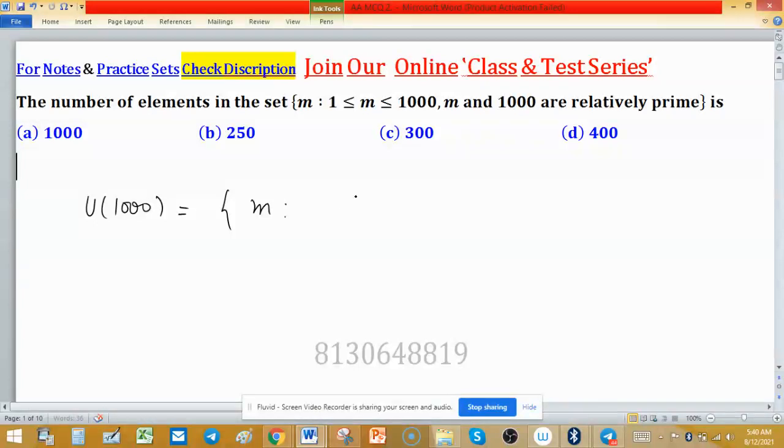...which satisfy this inequality. m is a natural number, greater than or equal to 1 and less than 1000, and gcd(m, 1000) equals 1. Specifically, you can say this is U(n).